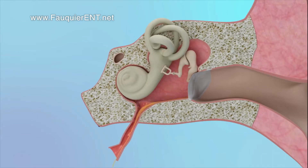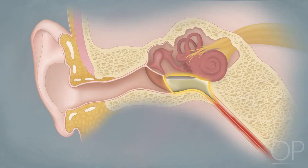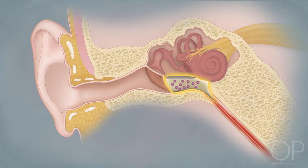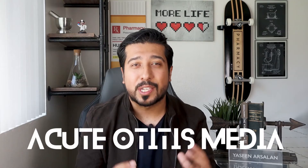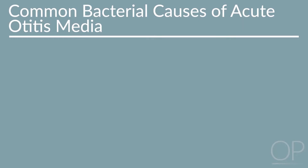When the tube is not working properly — let's say because you have a cold and you have all this congestion and swelling of the nose, throat, and the eustachian tube — normal drainage of fluid can't cross over, causing a fluid buildup behind the eardrum. When the fluid can't drain, bacteria and viruses start to grow in the ear, which leads to what is known as acute otitis media.